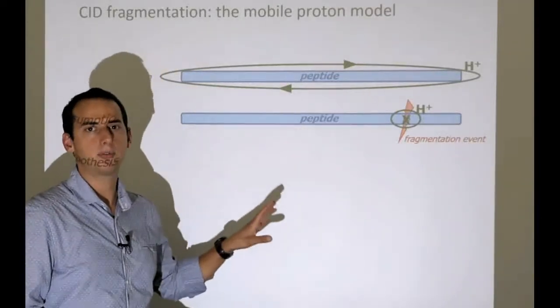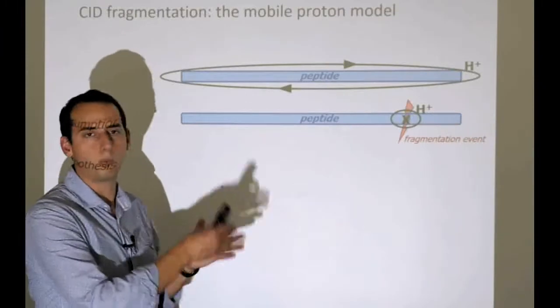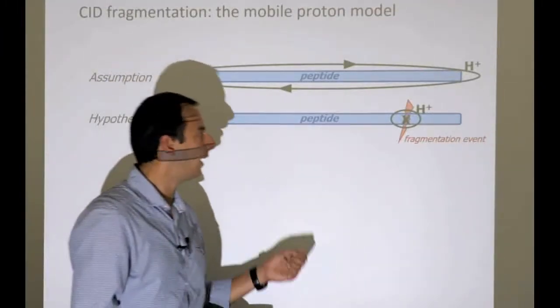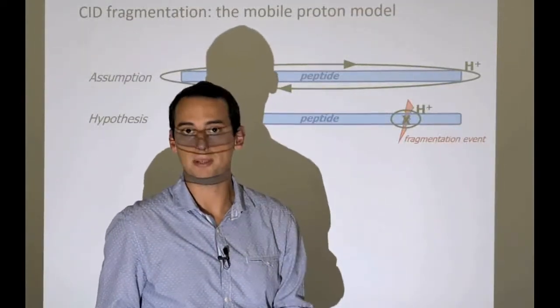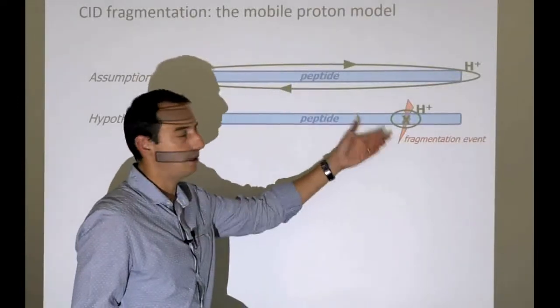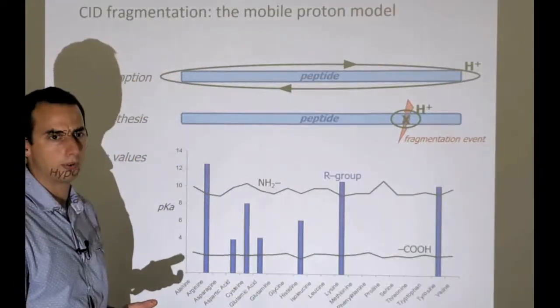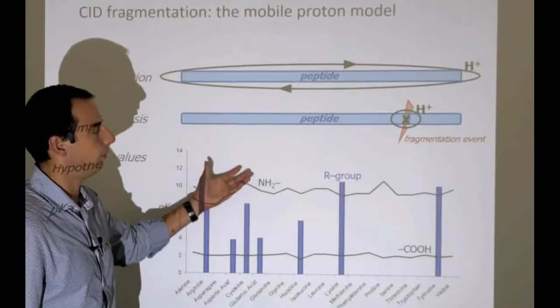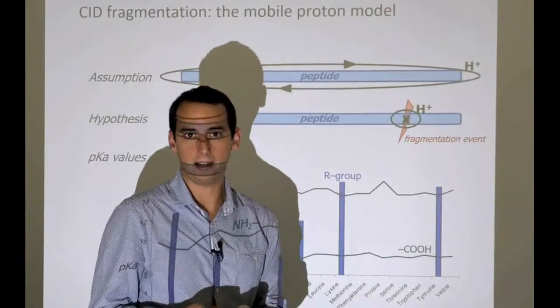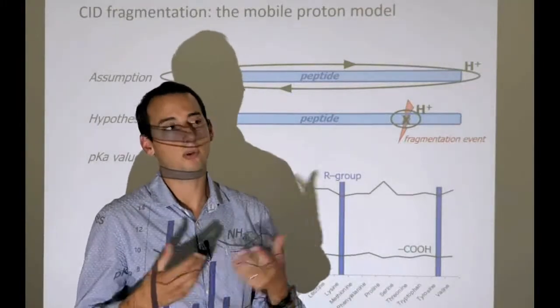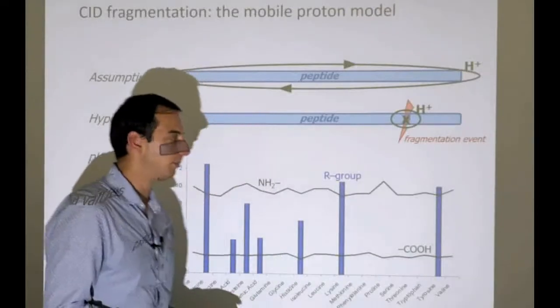We make a very important hypothesis: that the location where the proton is most often found will be the weakest point in the whole peptide structure. So if we fragment with CID or HCD—these are ergotic fragmentation methods where energy spreads across the whole backbone—these weakest points will be found and will trigger a fragmentation event. Knowing which fragments we can expect—usually B and Y ions—we try to answer: where do we think the proton will be?